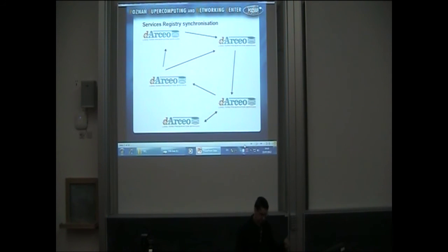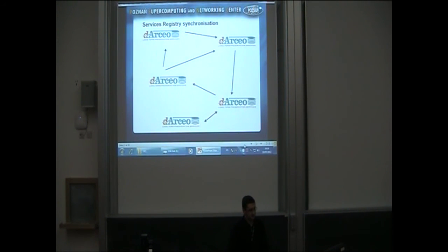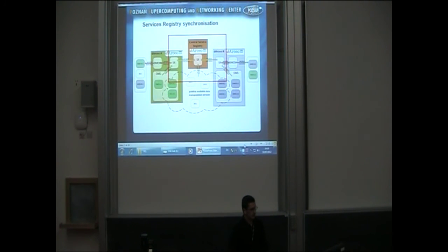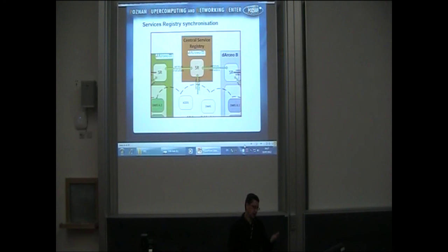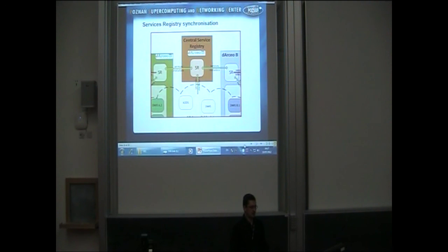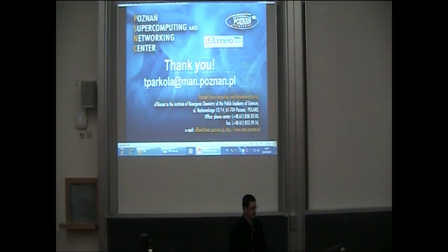Each DRTO deployment has a list of other deployments that it synchronizes with, and this is how metadata about the data manipulation services is shared. For example, DRTO A can use data manipulation services from DRTO B or others available in the public space. As shown in the red-marked area, it is also possible to set up a DRTO that acts as a central services registry, consisting only of the services registry element and providing information to other DRTO deployments.